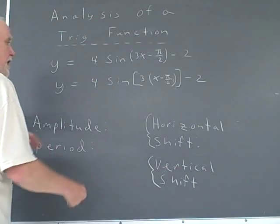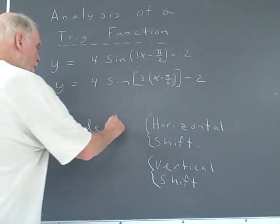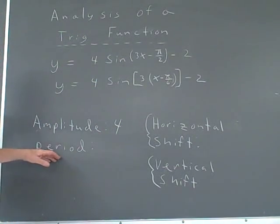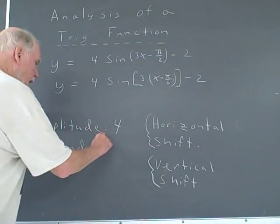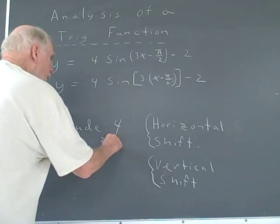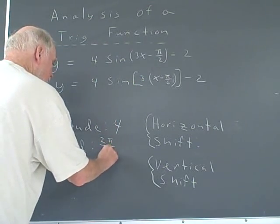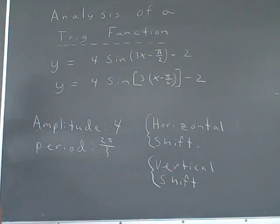For instance, the amplitude is 4, isn't it? It's going to go 4 up and 4 down. The period is the old period, 2 pi, divided by that 3. So, the new period is 2 pi over 3.